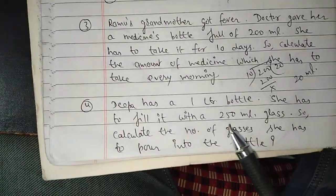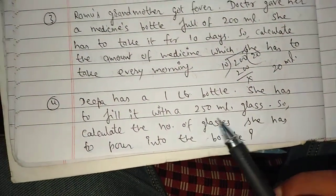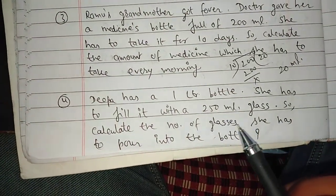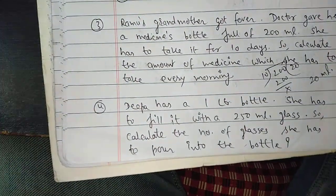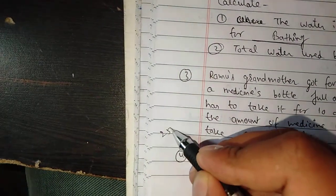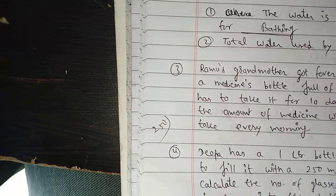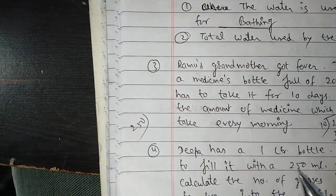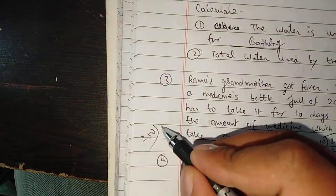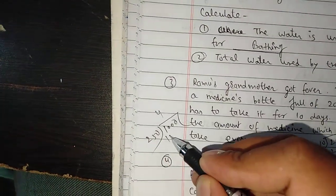It is about a 1 liter bottle. It is about 250 ml per glass. How much do you need to fill the bottle? 1 liter. Convert that into ml. How many? 1,000.